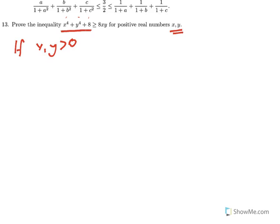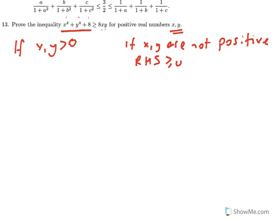If x and y aren't both positive — if just one of them is negative — then x times y becomes negative, so the right-hand side 8xy is negative. But the left-hand side x⁴ plus y⁴ plus 8 is positive, so the inequality is already correct in this case.